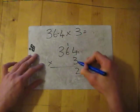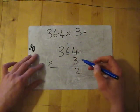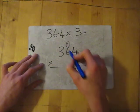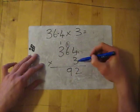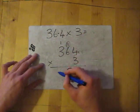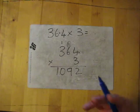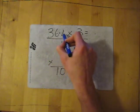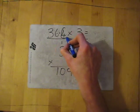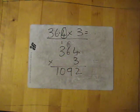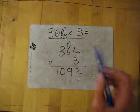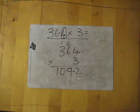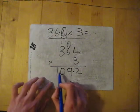Put down the 9, carry the 1. 3 times 3 is 9, add the 1 is 10. Now this is the bit where we haven't quite finished. We look at the question: how many numbers are after the decimal place? There's one. So in our answer we need one number after the decimal point. All we do is put it in. The answer to 36.4 times 3 is 109.2.